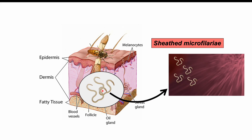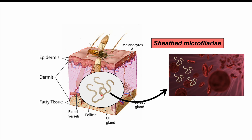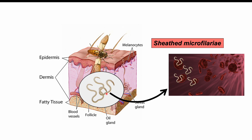A female worm can produce 12,000 to 39,000 sheathed microfilariae per day, and these worms can then enter into the bloodstream. We can often see these microfilariae in the bloodstream during the daytime, and at nighttime they can be found in different parts of the body. It takes 150 to 170 days from when a fly bites and injects L3 larvae to when a female worm begins producing microfilariae. They can also be found in the urine and spinal fluid.